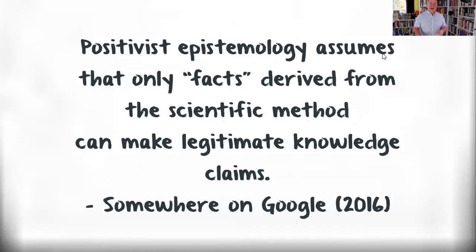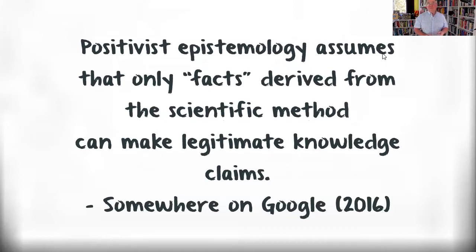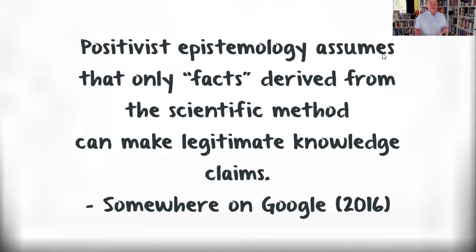If you're looking at the numbers from the point of view of quantitative research methods, look how this particular quote really applies: positivist epistemology assumes that only facts derived from the scientific method can make legitimate knowledge claims. From that basis, if we don't know the answer to particular things yet, it's just because we haven't done the right research. So from a positivist point of view, especially within healthcare, knowledge is only validated by asking: have we done the research studies on this? Can we prove or disprove something? So knowledge is constructed in very specific ways there.